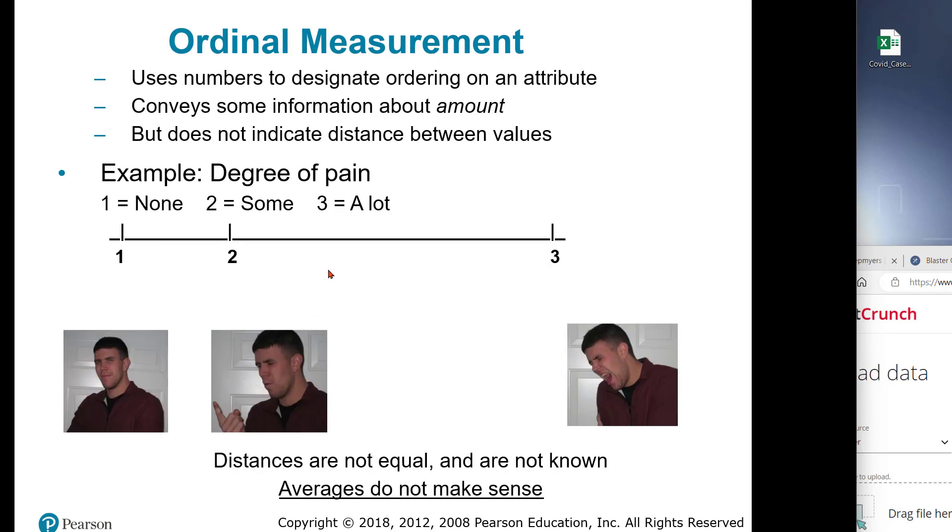The next one up is ordinal. It's a little confusing here in that it's in a ranking. You use numbers to designate ordering, but it doesn't indicate distance between the values. If you say that 1 is no pain, 2 is some pain, and 3 is a lot, it doesn't mean that the difference between 1 and 2 is the same as it is between 2 and 3. It's just a ranking. Here you can't do averages. You have some mathematics you can do on ordinal level variables, but this is just a ranking of the categories.